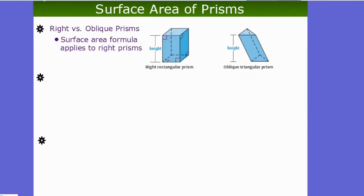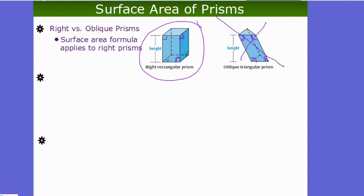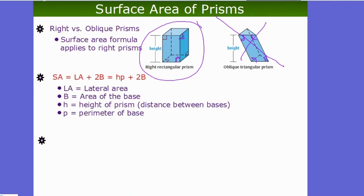There are right prisms and oblique prisms. Right prisms have right angles everywhere — everything is straight up and down. In an oblique prism you don't necessarily have right angles on each side. For the purposes of surface area, we will always be using right prisms. We'll look at oblique prisms more when we get to volume.